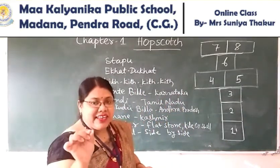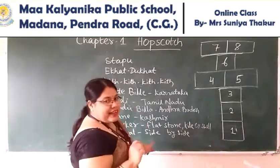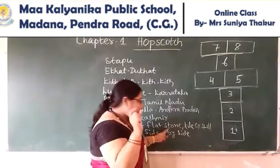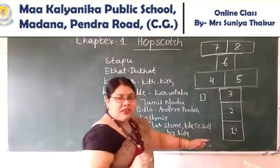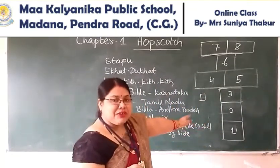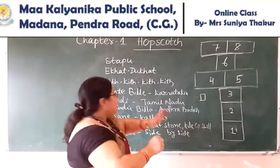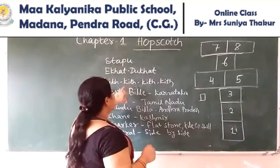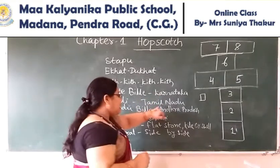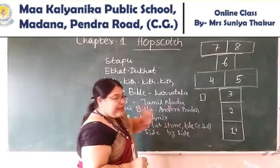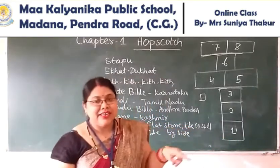With which material will you play? You will need a marker. What is a marker? It's a flat stone or tile. This type of material — this is called the marker. This is a street game called Step Up, Ekharpukhar, Kip Kip Kip — Kunte Villi in Karnataka, Bani in Tamil Nadu, Tokudu Villa in Andhra Pradesh, and Kali in Kashmir. Different names in different states.